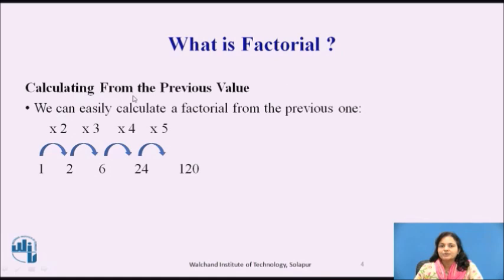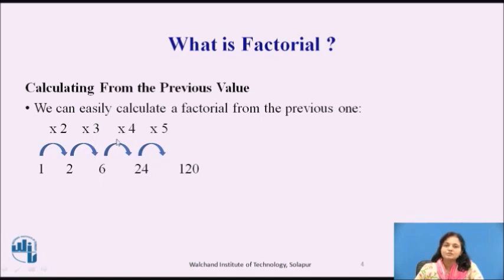Now, calculating from the previous value — if we are having a previous value, we can easily calculate the factorial from it. So if we are having 5 and we know that 4 factorial is 24, then 24 into 5 gives us 120. And if we want to calculate the fourth term and we know the previous term is 6, then 6 into 4 gives us 24. Whatever the number, if we know the previous factorial, it can easily be calculated.